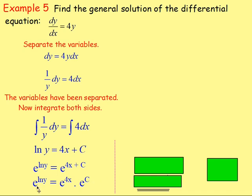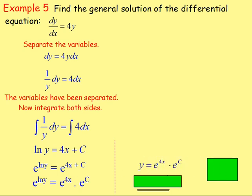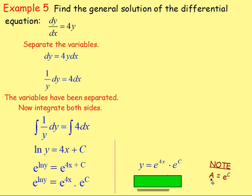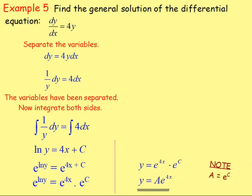From there, e to the power of ln — they're going to cancel out, just leaving you with y. And we'd have e to the power of 4x times e to the power of c. However, you tend not to leave it as e to the power of c. What you would say is you would just let that equal a. So y equals a times e to the power of 4x. And that's your answer.